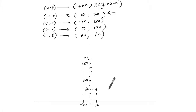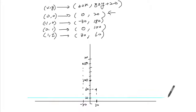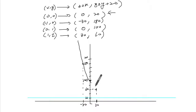At zero it's 20 — that's where the asymptote occurs. So the graph looks like this.